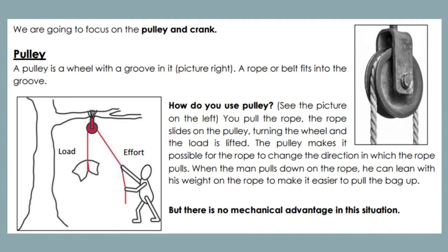The pulley makes it possible for the rope to change the direction in which the rope pulls. When the man pulls down on the rope, he can lean with his weight on the rope to make it easier to pull the bag up. But there is no mechanical advantage in this situation.